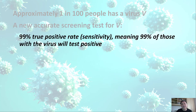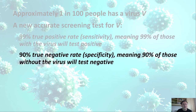In particular, it has a 99% true positive rate, which we call the sensitivity. That means 99% of those who have the virus will test positive, giving the correct result 99% of the time. It also has a 90% true negative rate, which we call the specificity, meaning 90% of those who don't have the virus will test negative.